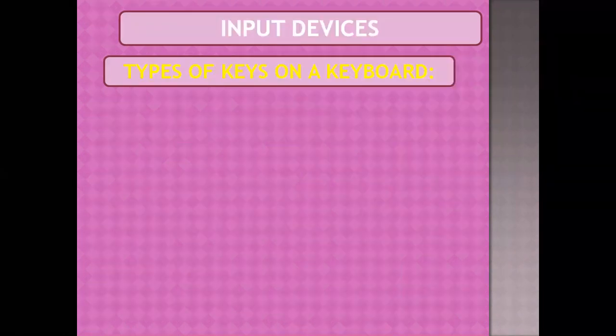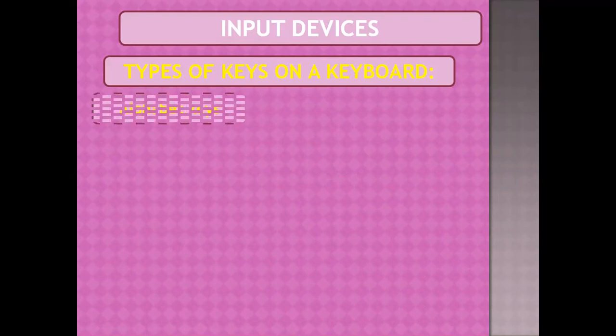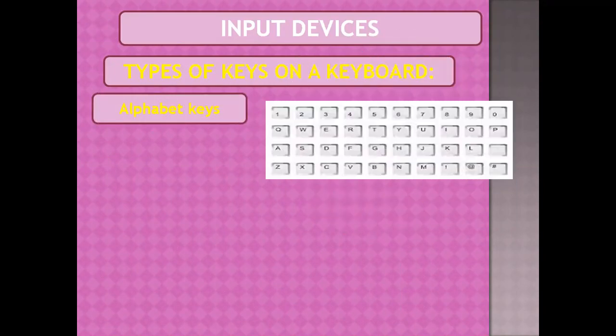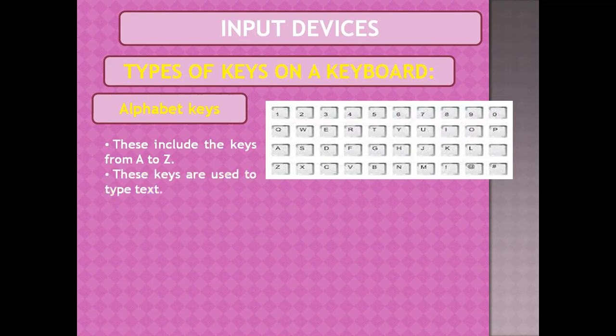The types of keys on a keyboard. First of all, we have alphabet keys. Alphabet keys are the keys from A to Z — the English alphabets. These are called the alphabet keys, and these keys are used to type text. Whenever we have to type something, we use these keys.